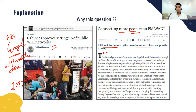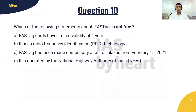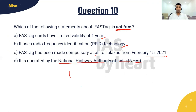This question was asked because the Cabinet recently approved setting up public Wi-Fi hotspots under PM-WANI. It is a low-cost option to reach unserved citizens and grow the economy. Note that Facebook and Google had also tried to provide local hotspots but ultimately closed those initiatives because they were not profitable, facing significant competition from low-cost internet providers like Jio. The final question is about FASTag: which of the following statements is not true?